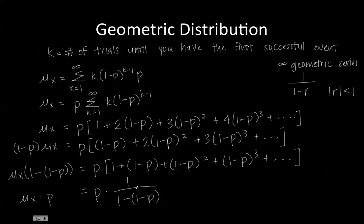We can divide both sides by P. And then as a result, we get expected value equals 1. 1 minus 1 is 0 plus P. And this is our final answer.